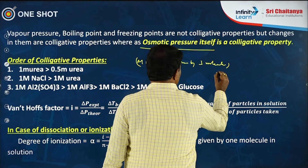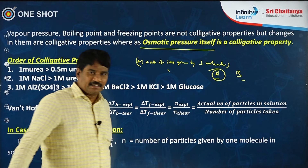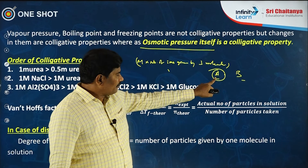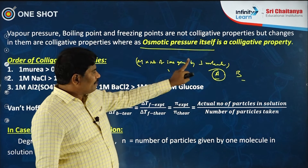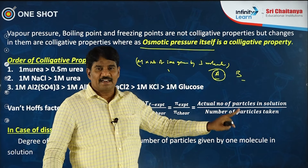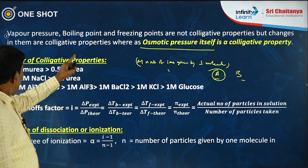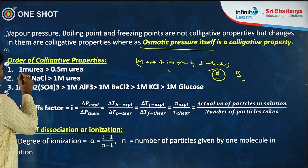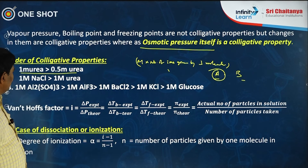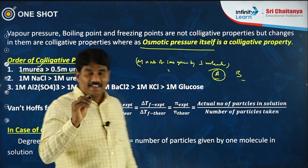Suppose A and B are two solutions. If A has greater colligative properties, then vapor pressure of A is less than B, boiling point of A is greater than B, freezing point of A is less than B, and osmotic pressure of A is greater than B. For example, 1 molar urea and 0.5 molar urea are both non-electrolytes; greater concentration means greater colligative properties, so 1 molar urea has greater colligative properties.